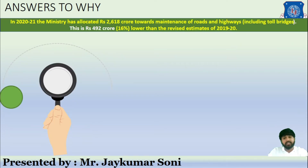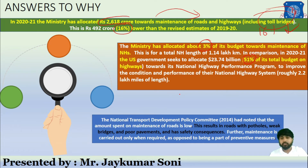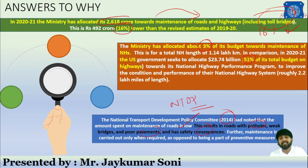Looking at fund allocation, in 2020 the Ministry allocated ₹2.618 crore for roads and highways including toll and bridges, which is approximately 16% lower than what is needed. In the US, 51% of the highway budget is spent on roads, whereas in India only 3% is spent. The National Transport Development Policy (NTDP) noted in 2014 that the amount spent on road maintenance is quite low, leading to potholes, poor bridges, deficient pavements, and safety consequences.